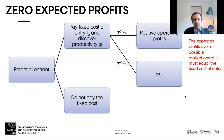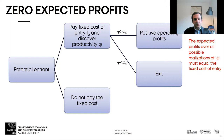The idea is that there is a pool of potential entrants. Each potential entrepreneur has the possibility of paying a fixed cost of entry to discover its productivity phi. Then if the productivity is higher than a certain cutoff, the firm will make positive profits. And if the productivity is less than the cutoff, the firm will exit. The market forces generate an allocation whereby the least productive firms are forced out of the market. The equilibrium value of the cutoff is determined by the zero expected profits condition — the expected profits of paying the fixed cost of entry and discovering your productivity must equal the fixed cost of entry.